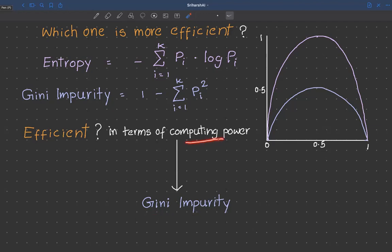But in terms of computing power, I see that Gini impurity is performing better than entropy in terms of computing power.